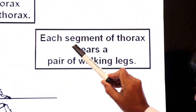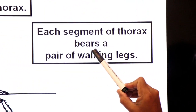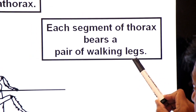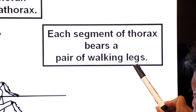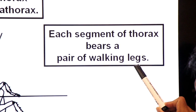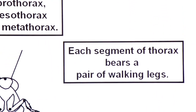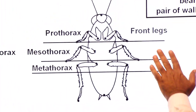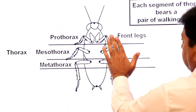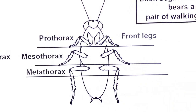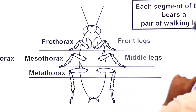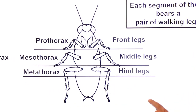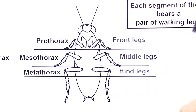Each segment of thorax bears a pair of walking legs — a front pair, a middle pair, and a hind pair. Prothorax has the front legs (one left, one right). Mesothorax has the middle legs (one left, one right). And metathorax has the hind legs (one left, one right).